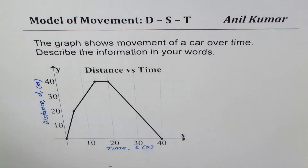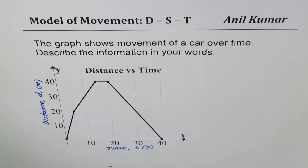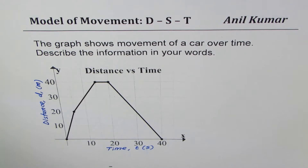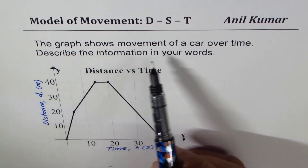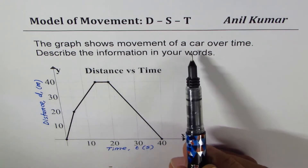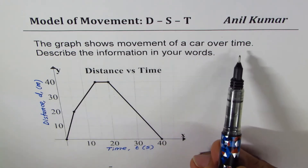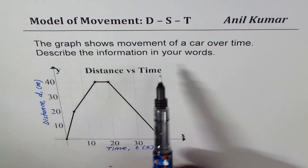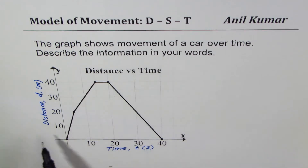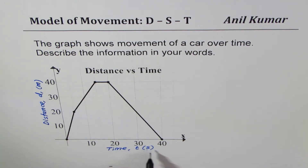I am Manil Kumar. In this video we will understand how to read a distance-time graph. The graph shows movement of a car over time. On the x-axis we have time t in seconds.